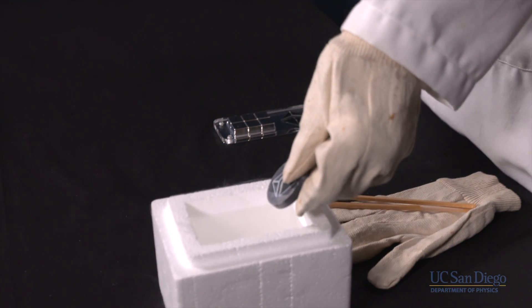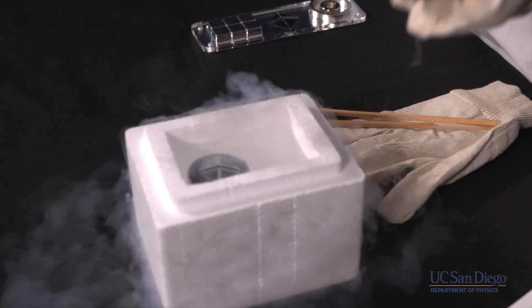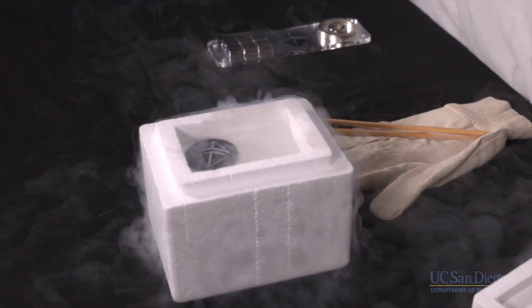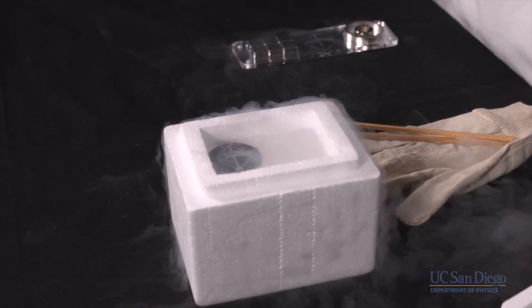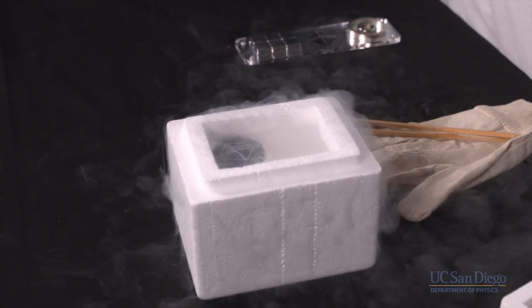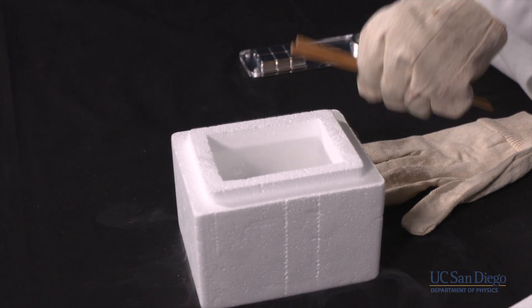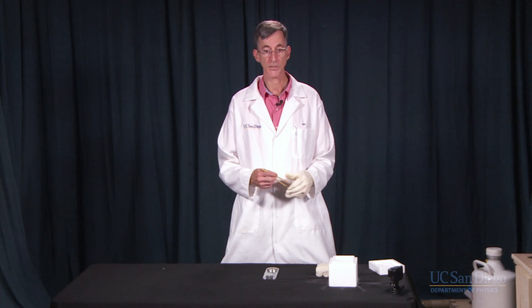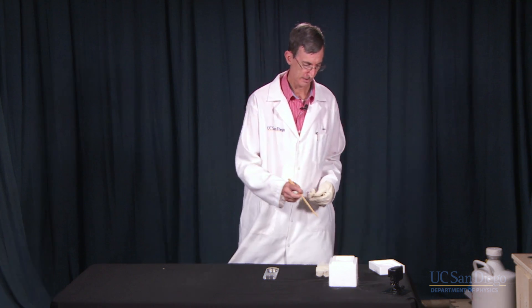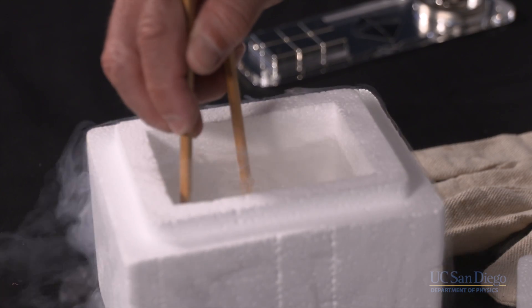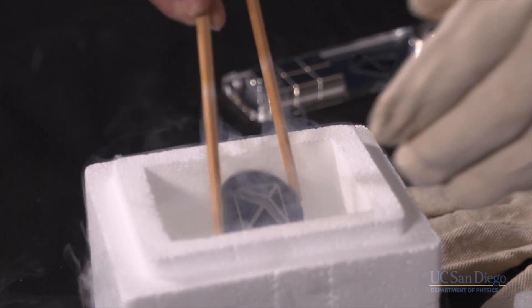So when I drop this into liquid nitrogen, some bubbling will occur due to the fact that the liquid nitrogen is giving up energy to the superconductor and is bubbling off as a gas. Once this reaches liquid nitrogen temperatures, the bubbling will become minimized. And I'll take it out using some non-magnetic chopsticks. So once it's cooled to liquid nitrogen temperatures, I know it's below its critical temperature.